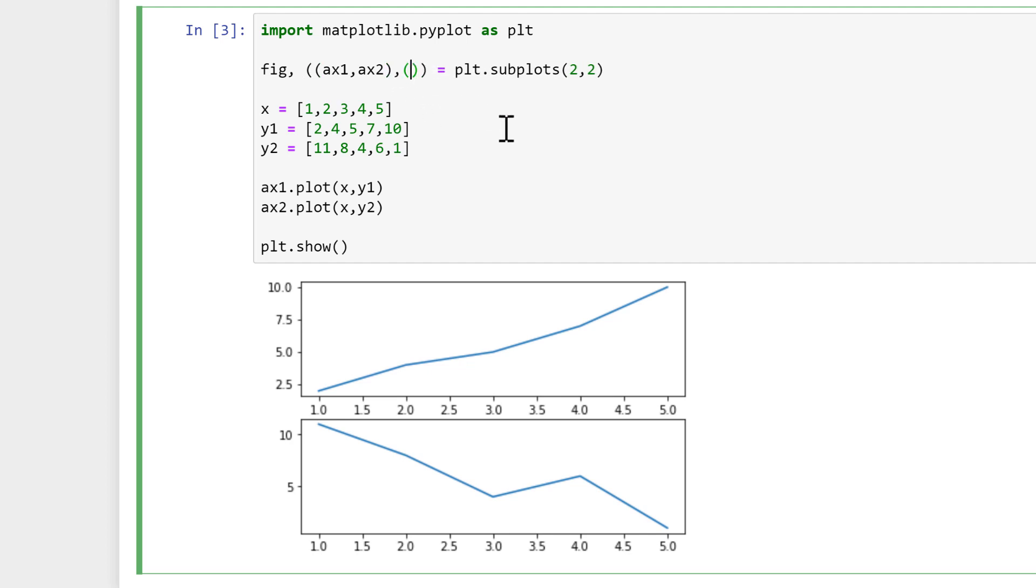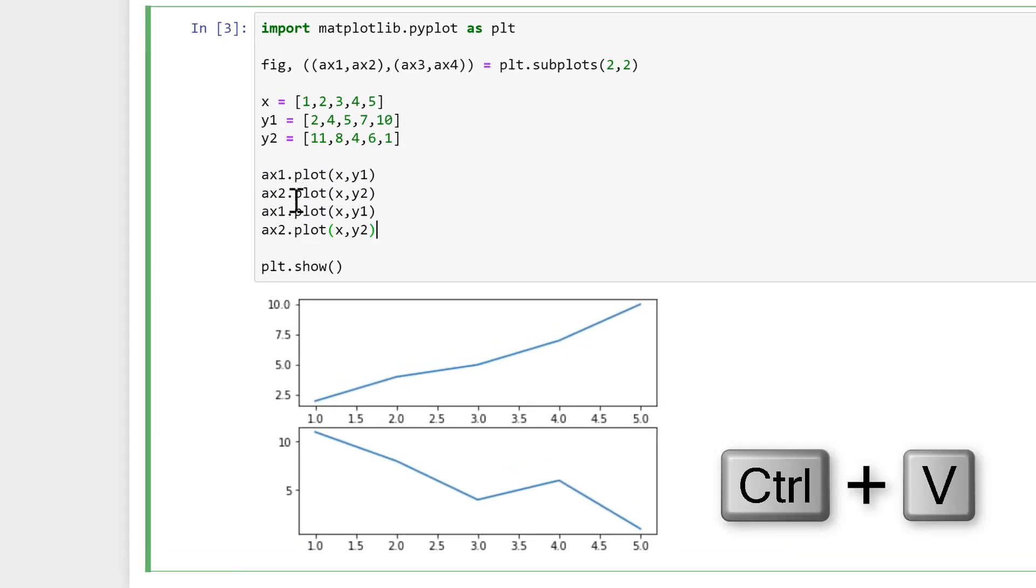And inside the brackets I'll put ax3 and ax4. I won't bother making more data this time, I'll just copy these two lines of code here and change this to axes 3 and axes 4.